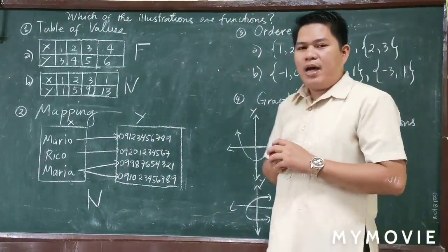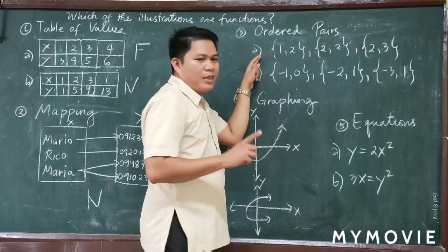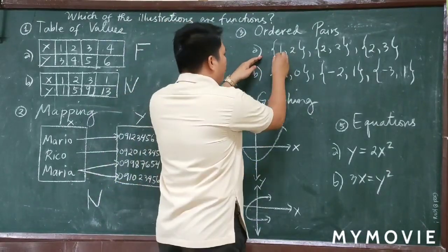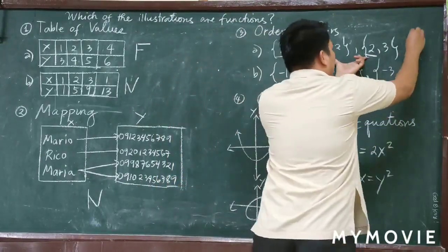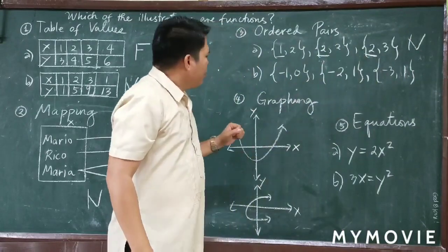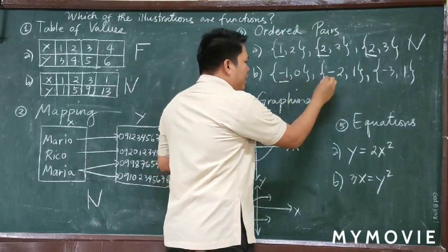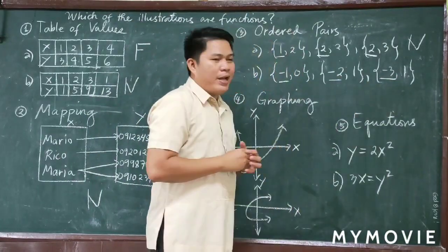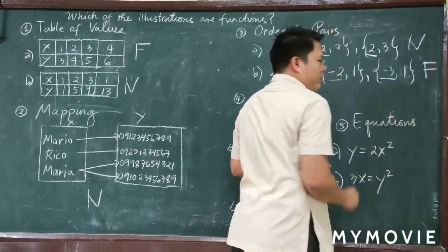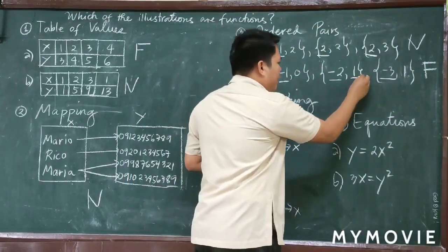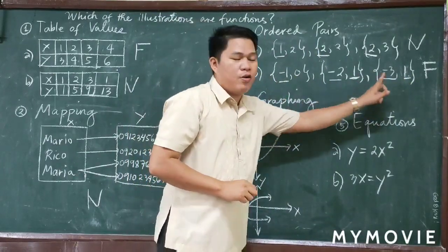For ordered pairs, we have: (1,2), (2,2), (2,3). You just look at the first element, which is the domain: 1, 2, 2. Since the value 2 repeats in the domain, this is not a function. For Letter B, the first elements are -1, -2, -3 — no repeats. So this is a function. Even if the range values repeat, you only check the domain elements.